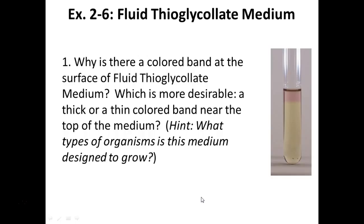The colored band indicates where oxygen is. A thin colored band near the top of the media is more desirable — we just want a small amount of oxygen. If it diffuses too far we won't have an anaerobic zone at the bottom. Our uninoculated tube had a thick layer because the media was made the day before. Tubes in the refrigerator that are completely pink can't be used as-is, so we boil them for five minutes to drive all the oxygen out, then cool them and let oxygen slowly come back in before inoculating.